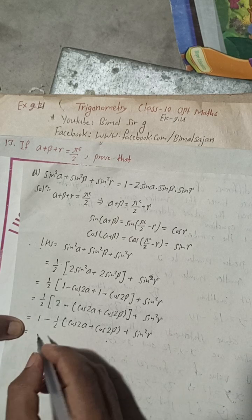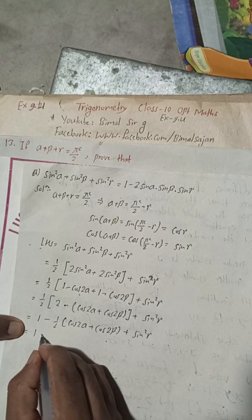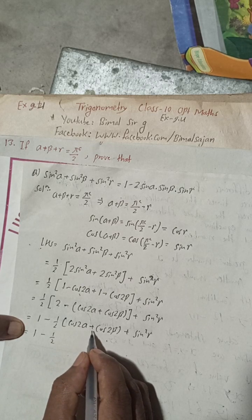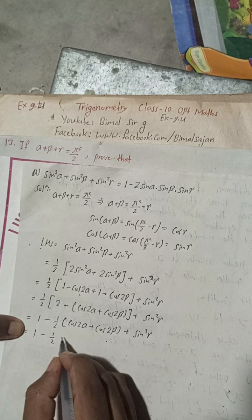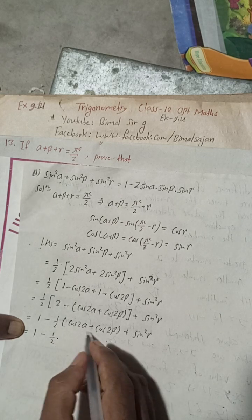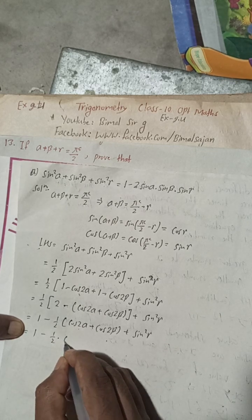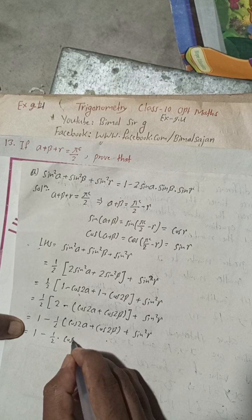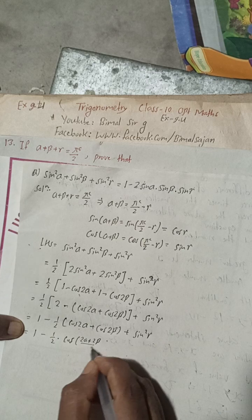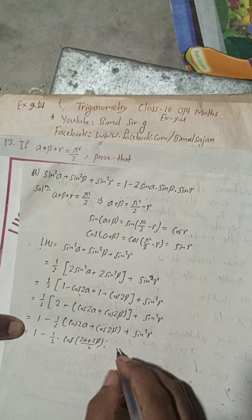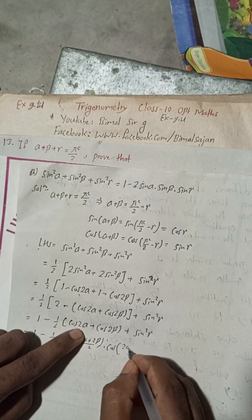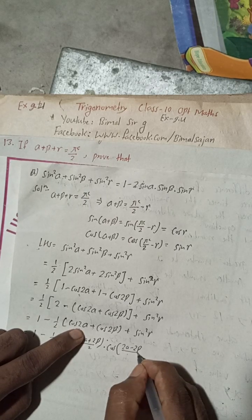Now for (cos2α + cos2β), this is of the form cosC + cosD. The formula is cosC + cosD = 2cos((C+D)/2)·cos((C−D)/2). So cos2α + cos2β = 2cos((2α+2β)/2)·cos((2α−2β)/2).